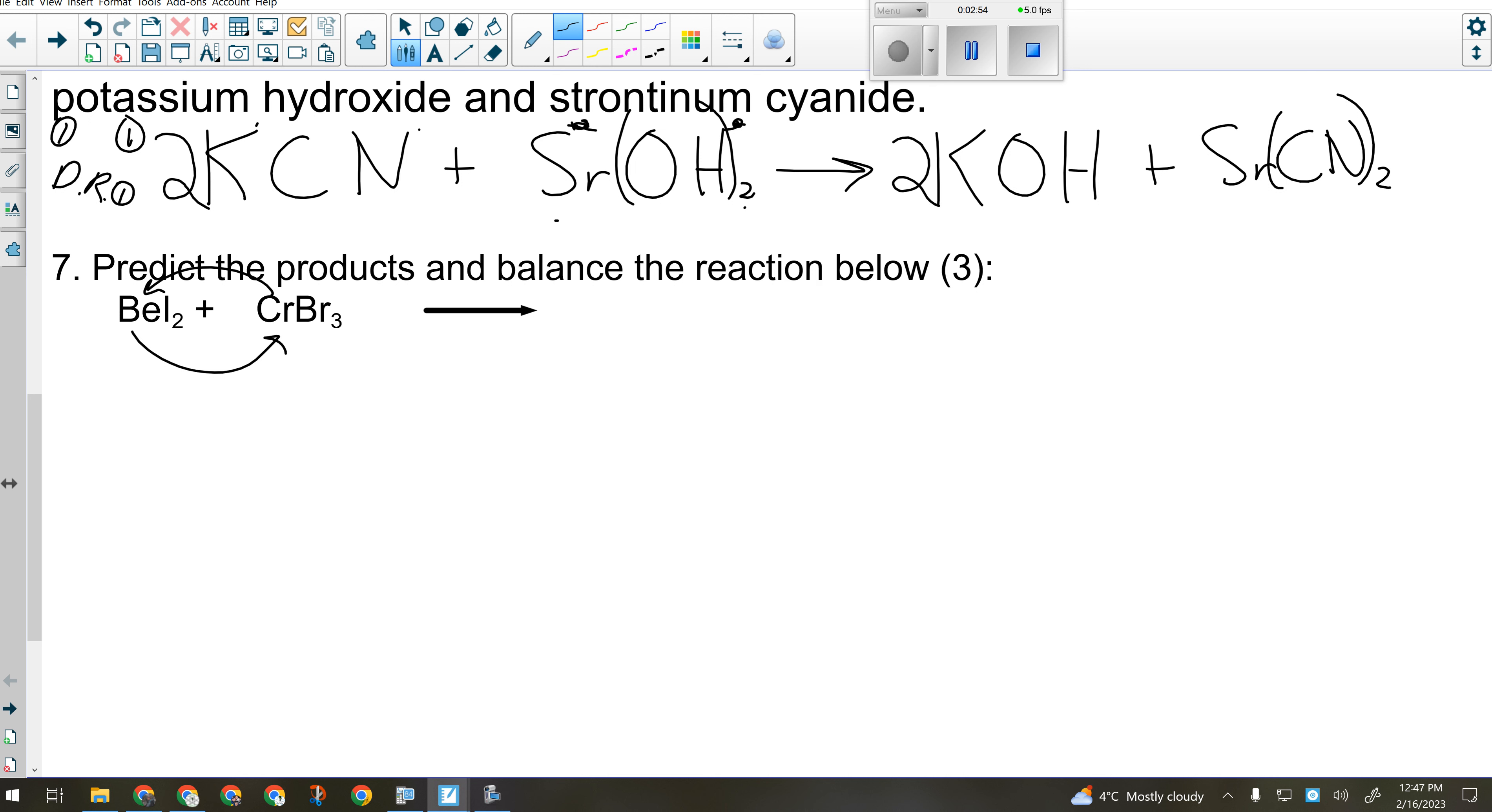So that means that on this side here, chromium will end up with iodine, and beryllium will end up with bromine.